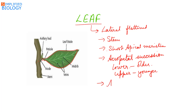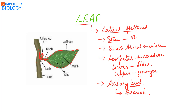It always has an axillary bud in its axil. An axil is the region between the leaf and the stem. The axillary bud is an underdeveloped shoot which later grows into a branch. So, leaf is a lateral flattened part of the plant; it develops on the stem at the nodes, formed from the shoot apical meristem, develops in acropetal succession, and has axillary buds from which branches develop.